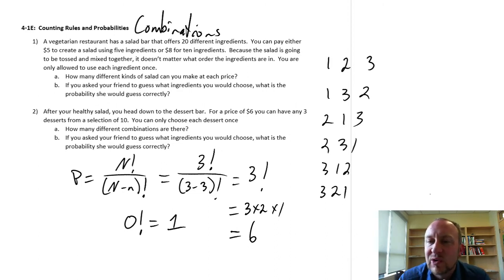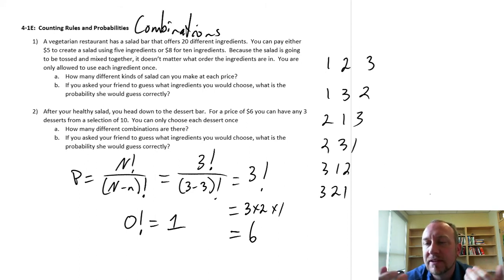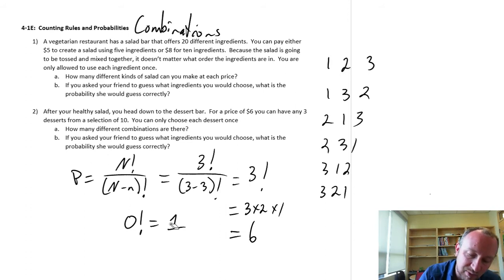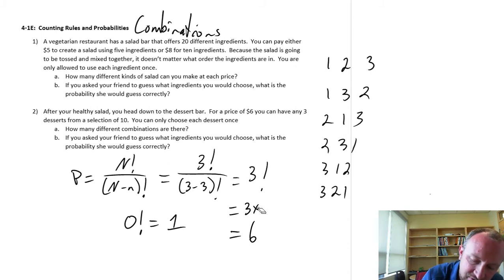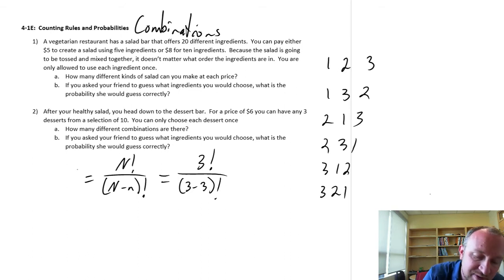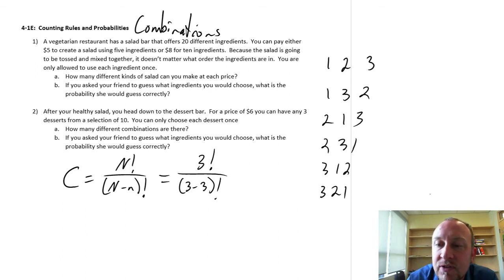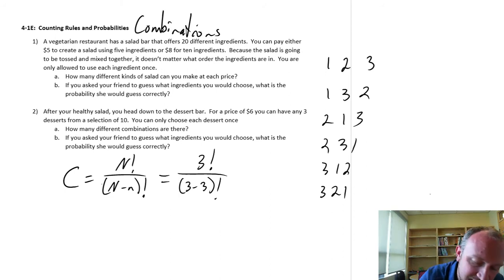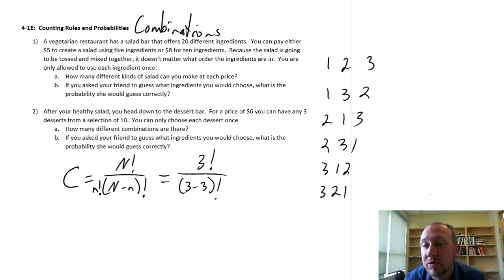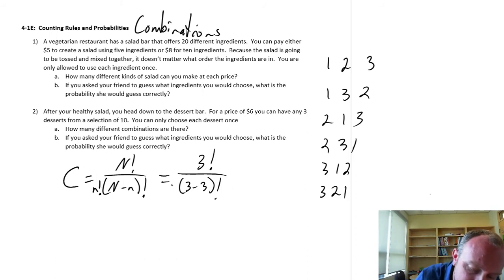Now what if I don't care about the order? What I need to do then is remove from these calculations the number of ways that these values can be ordered. The way we do that is we simply add a term to our formula — now I'm going to say C instead of P, because we're talking about combinations. I need to adjust this formula for the number of ways that these values can be ordered, which is defined by the number we're choosing, which is 3. So here I have 3 factorial in the denominator, and so this becomes 1.